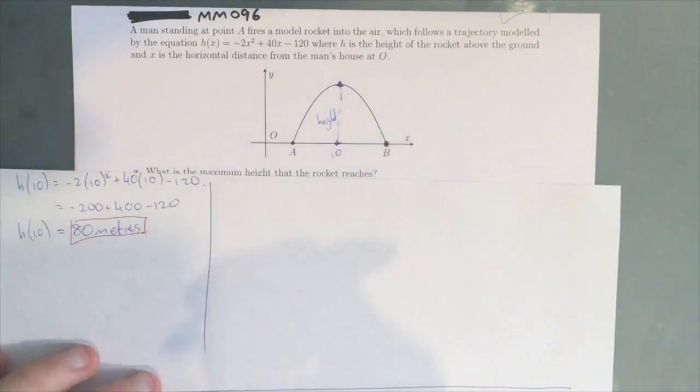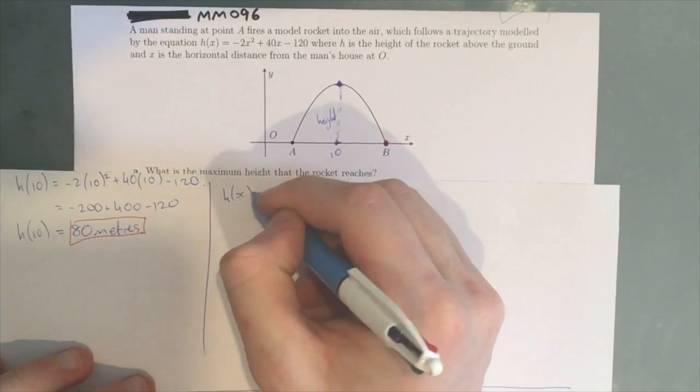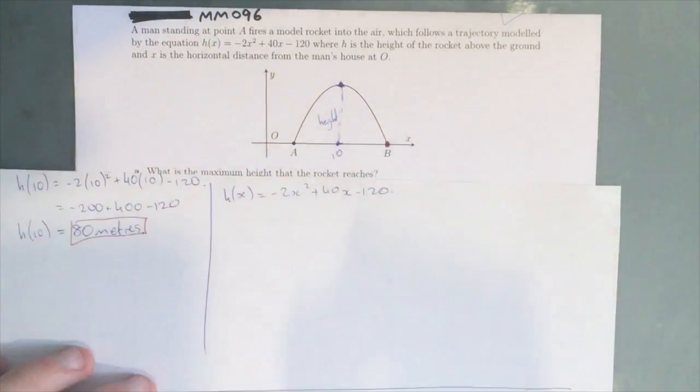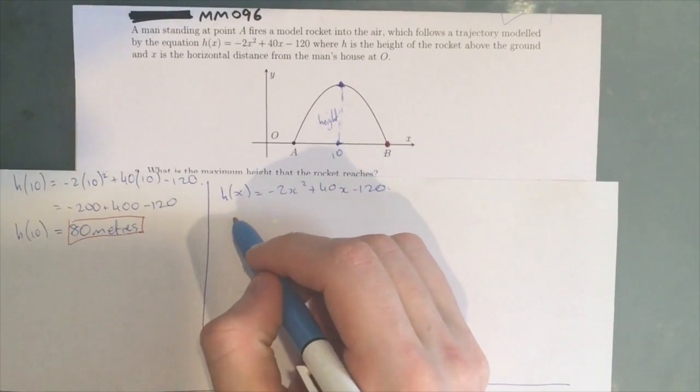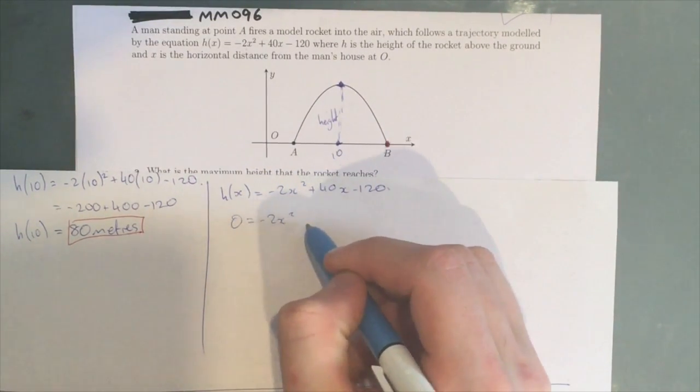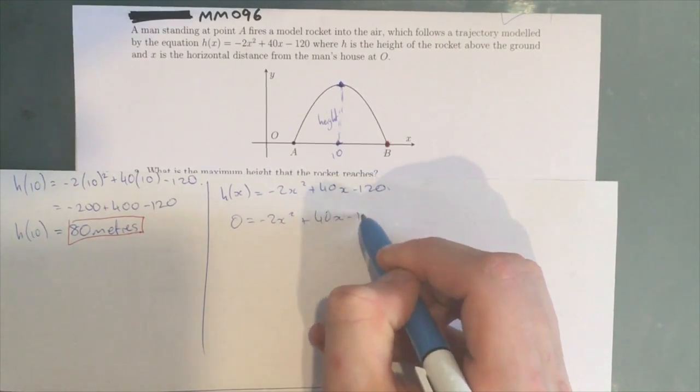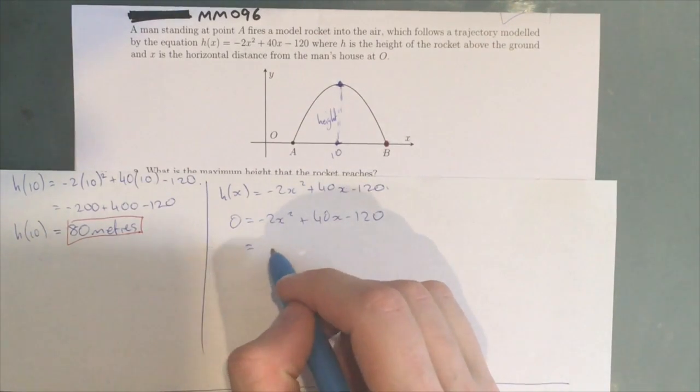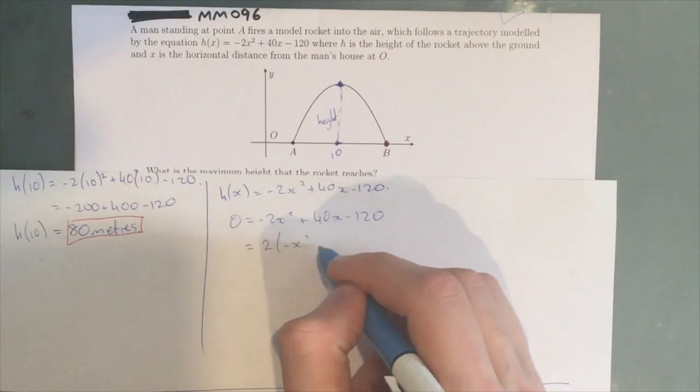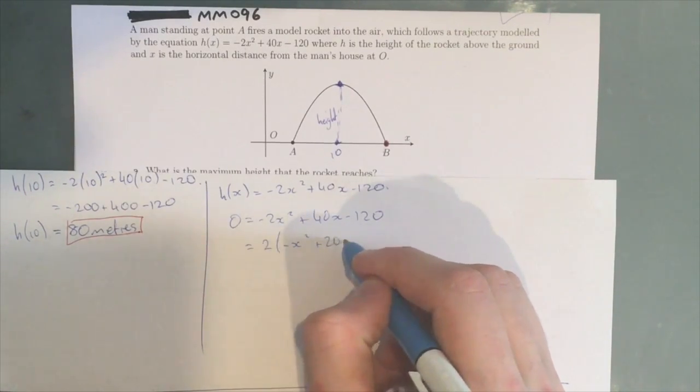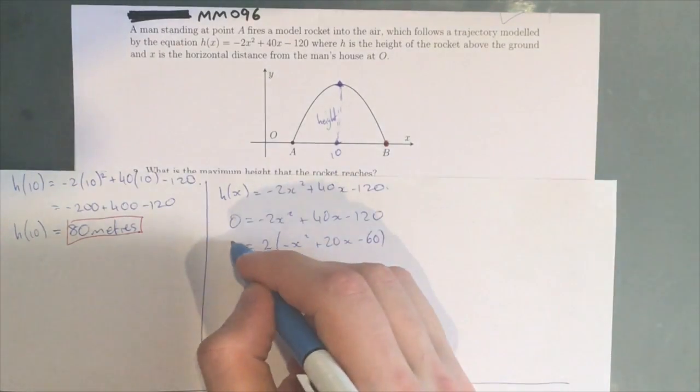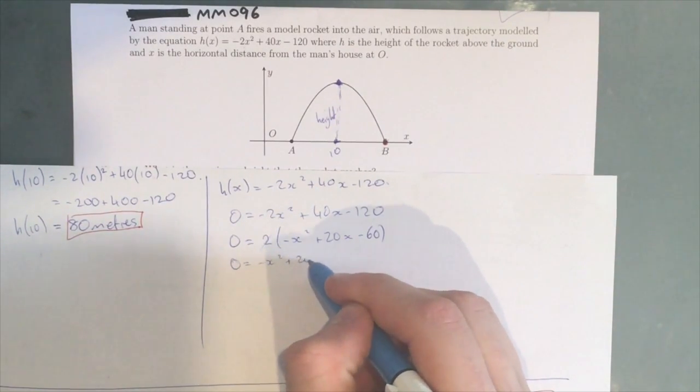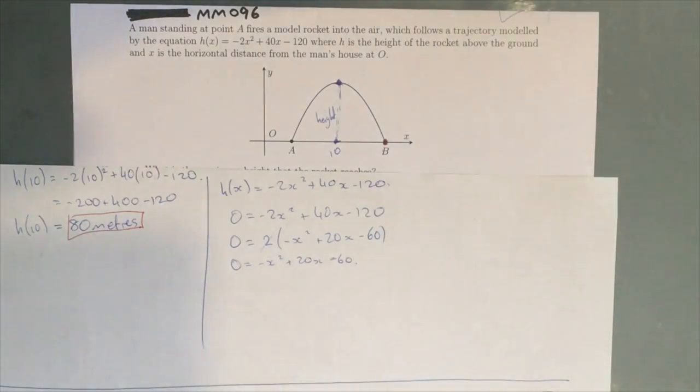So we've got H(x) = -2x² + 40x - 120. And for the x-intercepts, we need to let y equal 0. So 0 = -2x² + 40x - 120. We have a common factor of 2, so 2(-x² + 20x - 60) = 0. The 2 can cancel, so we end up with 0 = -x² + 20x - 60.